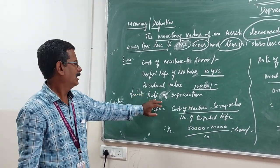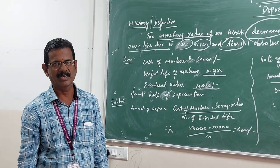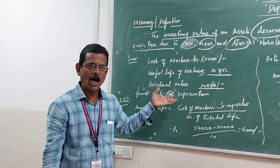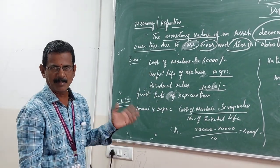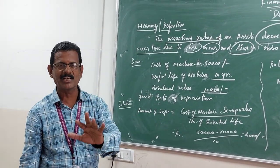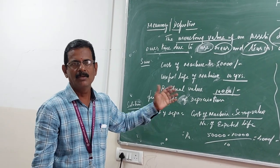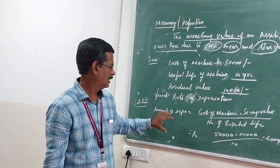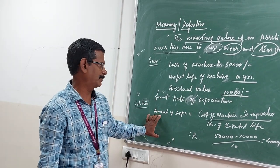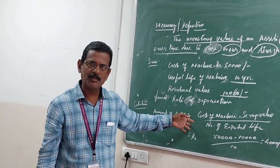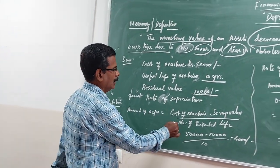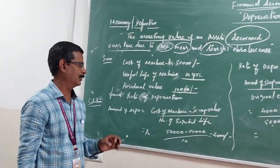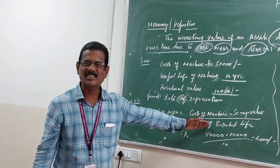From this information, we have to find the rate of depreciation. Before finding the rate of depreciation, we first find the amount of depreciation. The formula for the amount of depreciation is: cost of the machine minus scrap value, divided by the number of expected years of life.